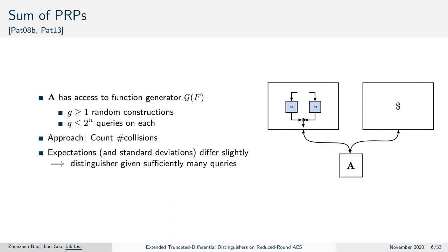Patarin modeled the setting where a distinguisher has access to multiple sum-of-permutation instances. The distinguisher has access to g such constructions and can query up to 2^n queries on each. The approach he used was to count the number of collisions that occurred from pairs of distinct inputs.